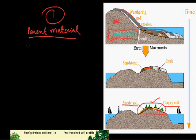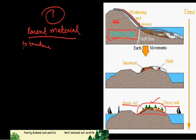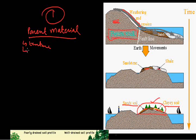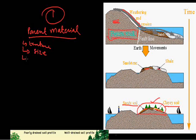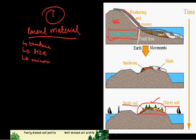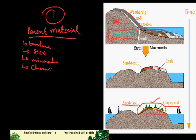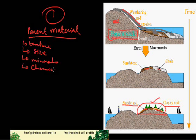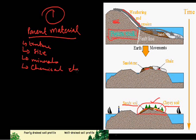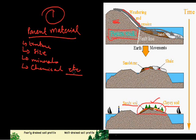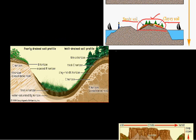This is how the texture of the soil — the size of the soil particles, the minerals, and the chemicals — all depends on the parent rock from which the soil is made.